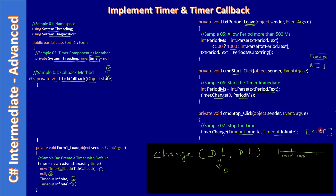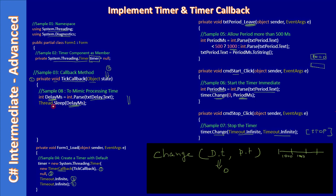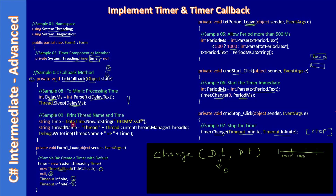Now let's look inside the timer callback. We take the delay value, store it as delay milliseconds, then apply Thread.Sleep to mimic how long the timer routine takes. In practice this would be your actual task. You should benchmark how long your task takes. Here we use Sleep to mimic the execution time of the callback procedure.